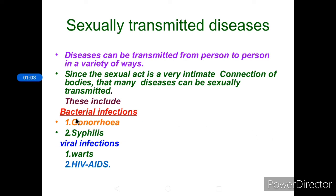Sexually transmitted diseases include bacterial infections and viral infections. Bacterial infections include gonorrhea and syphilis, while viral infections include warts and HIV/AIDS. AIDS stands for Acquired Immunodeficiency Syndrome and is caused by the Human Immunodeficiency Virus (HIV). This concludes our discussion on contraceptive methods and sexually transmitted diseases.